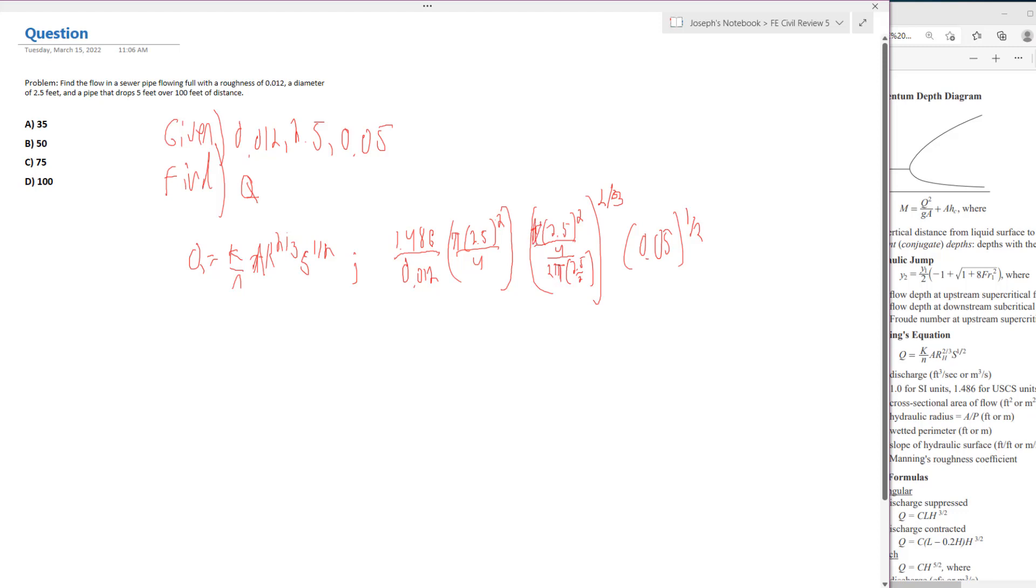The pi's can cancel out. And one of the 2.5's can cancel out here as well. So let's go into the calculations portion.